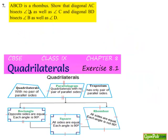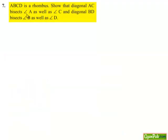Moving on to the 7th question. ABCD is a rhombus. Show that diagonal AC bisects angle A as well as angle C, and diagonal BD bisects angle B as well as angle D. Now moving on to the solution.